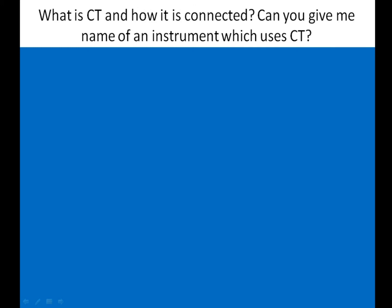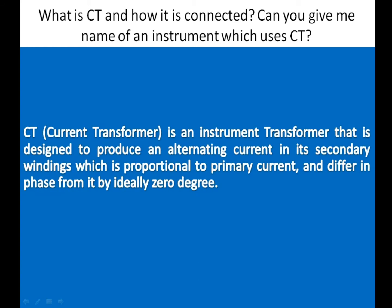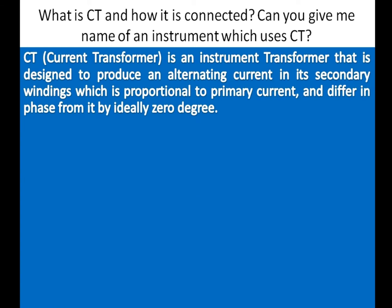In this video, I'll explain how to answer the question: What is CT and how it is connected? Can you give me the name of an instrument which uses CT? CT, current transformer, is an instrument transformer that is designed to produce an alternating current in its secondary windings which is proportional to primary current, and differs in phase from it by ideally zero degrees.